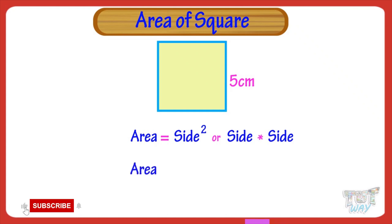So, area of this square equals 5 multiplied by 5 equals 25 cm square. As area is always mentioned in square units.